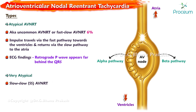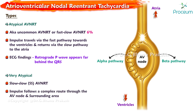This rare form of AVNRT is slow-slow AVNRT, where the impulse follows a complex route through the AV node and the surrounding area. Only four percent of all patients diagnosed with AVNRT have slow-slow AVNRT.